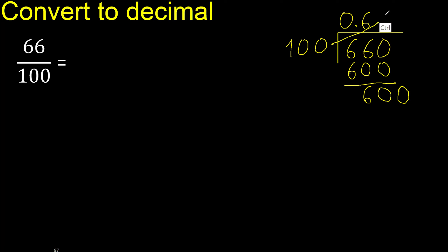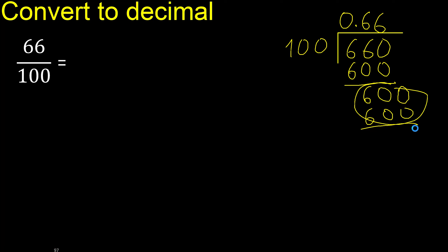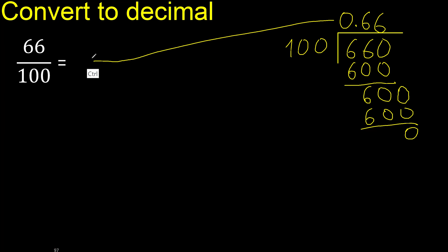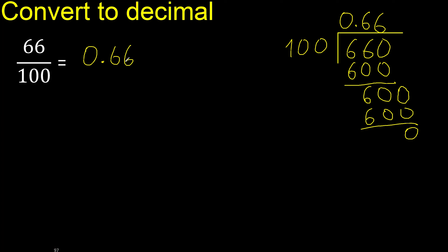100 multiplied by which number? 100 multiplied by 6 is 600. Subtract — 0. Therefore finish.